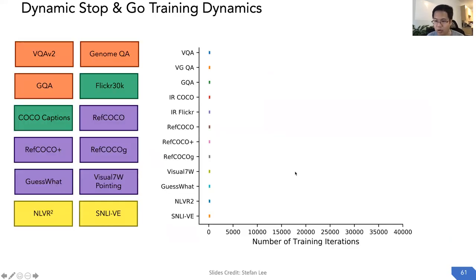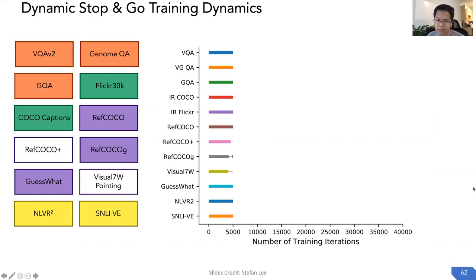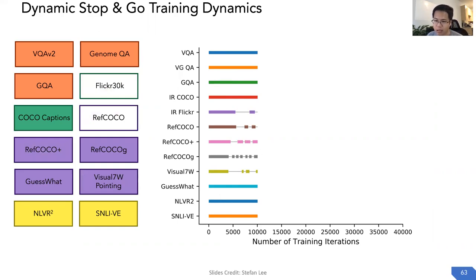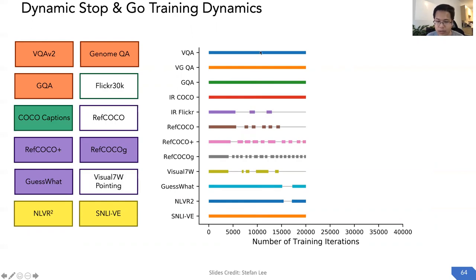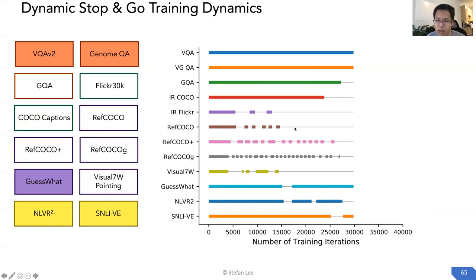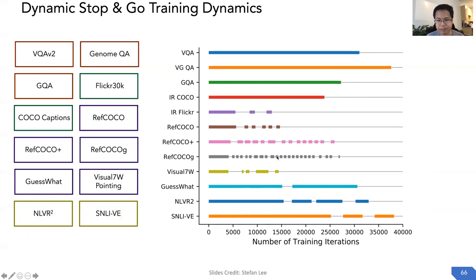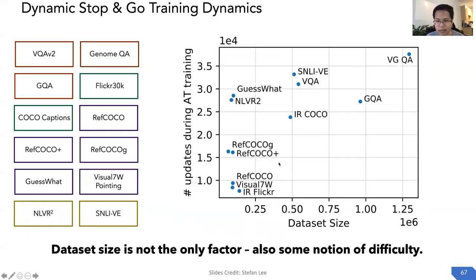To visualize the Dynamic Stop and Go training dynamics, we plot the mode for each task during training iterations. At 5,000 iterations, RefCOCO+ and Visual7W are in stop mode while others remain in go mode. At 10,000 iterations, Flickr30K and RefCOCO are put into stop mode, while RefCOCO+ goes back to go mode. At 20,000 iterations, the QA tasks are still in go mode without any stopping. At 30,000 iterations, most smaller datasets are in stop mode except GuessWhat, which is a harder task. Interestingly, dataset size is not the only factor — task difficulty also affects training dynamics, with GuessWhat, NLVR2, Visual Entailment, and VQA showing more frequent updates relative to their dataset sizes.